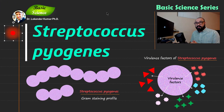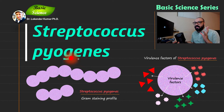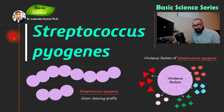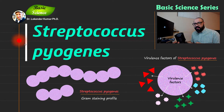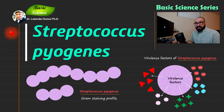Hi everyone, welcome to Basic Science Series. I'm your host Lokindar Kumar, and today we will discuss Streptococcus pyogenes. I've already discussed Staphylococcus aureus in detail in previous videos, including media profiling, gram staining profiling, virulence factors, and infections. I also discussed blood agar and how to analyze hemolysis. I want you to watch those videos because they will help you understand further videos on Streptococcus pyogenes.